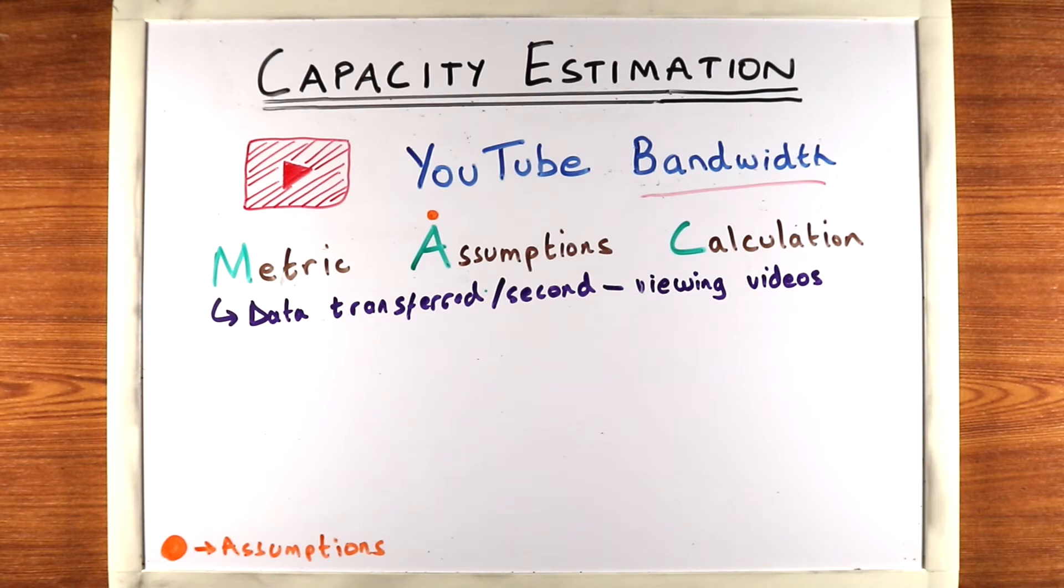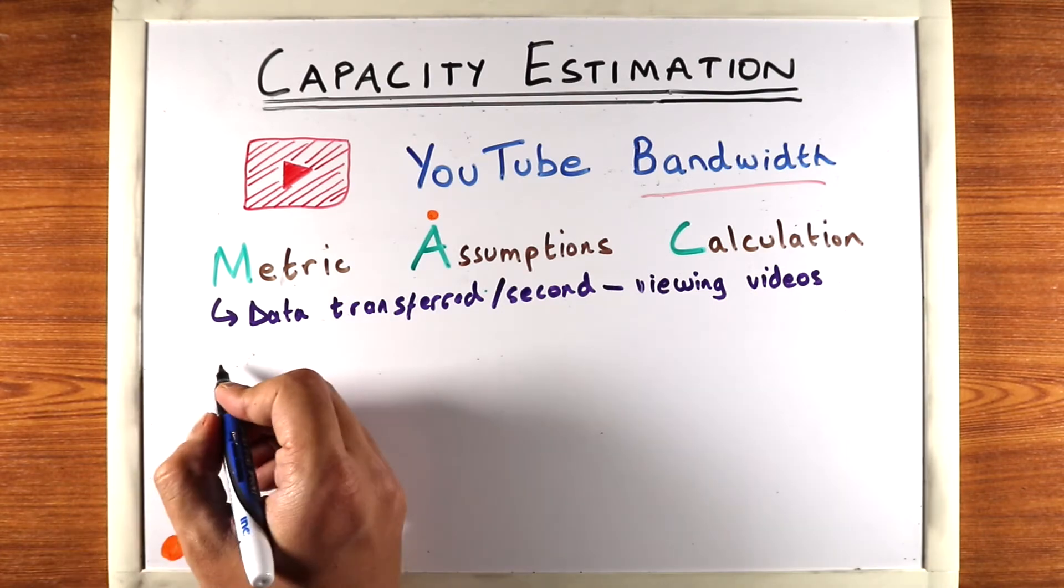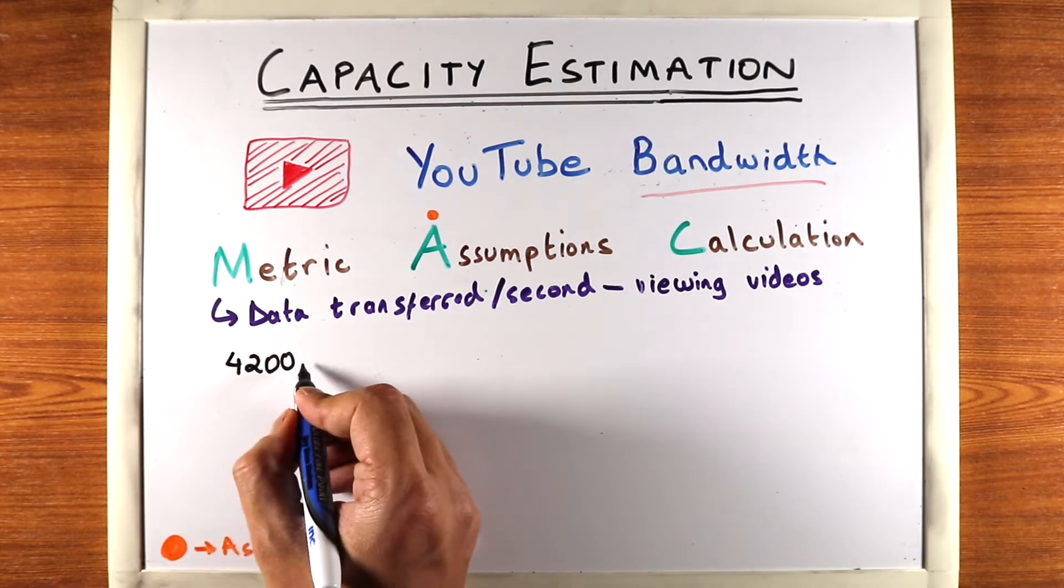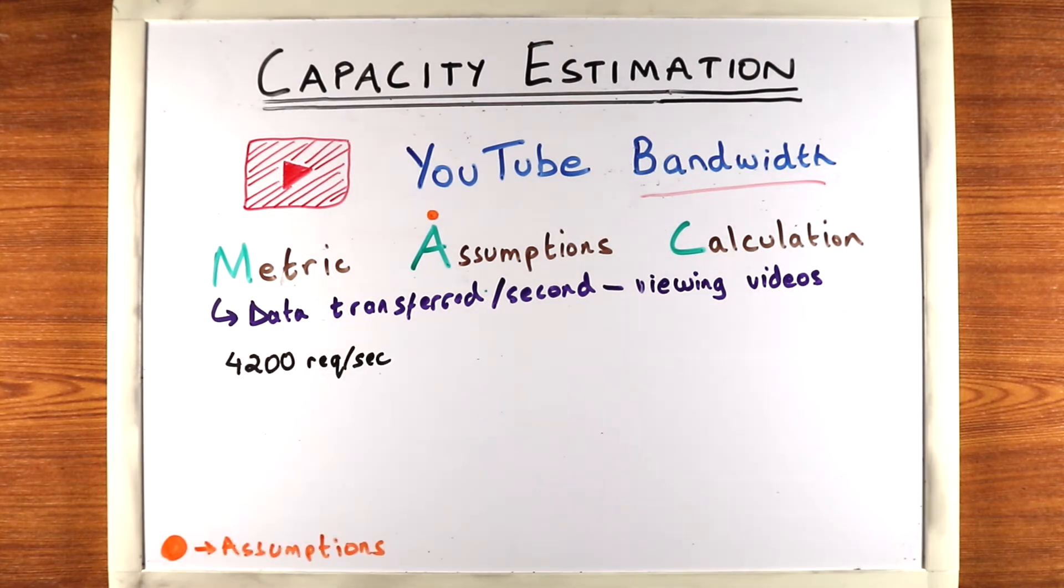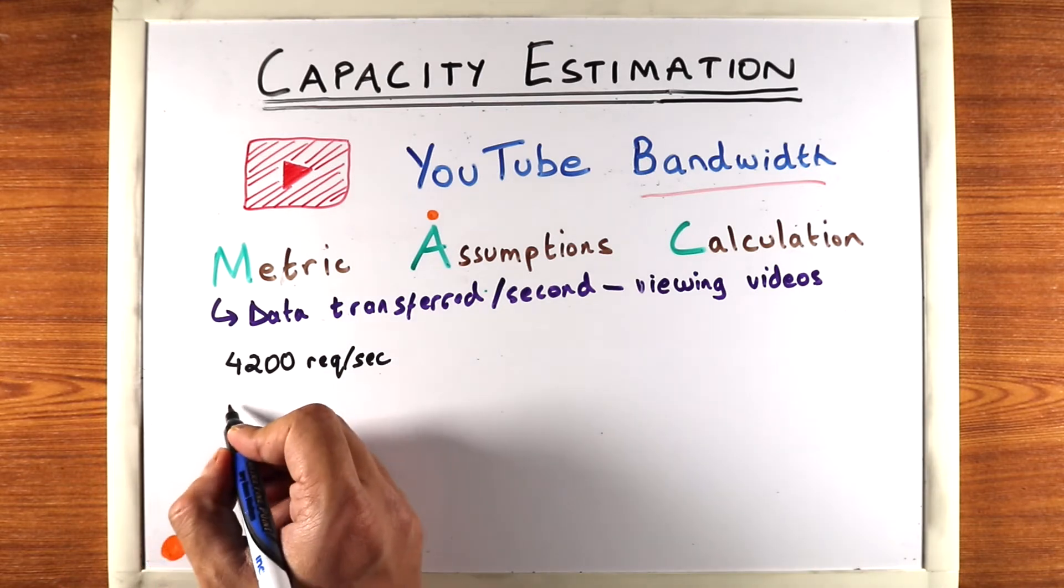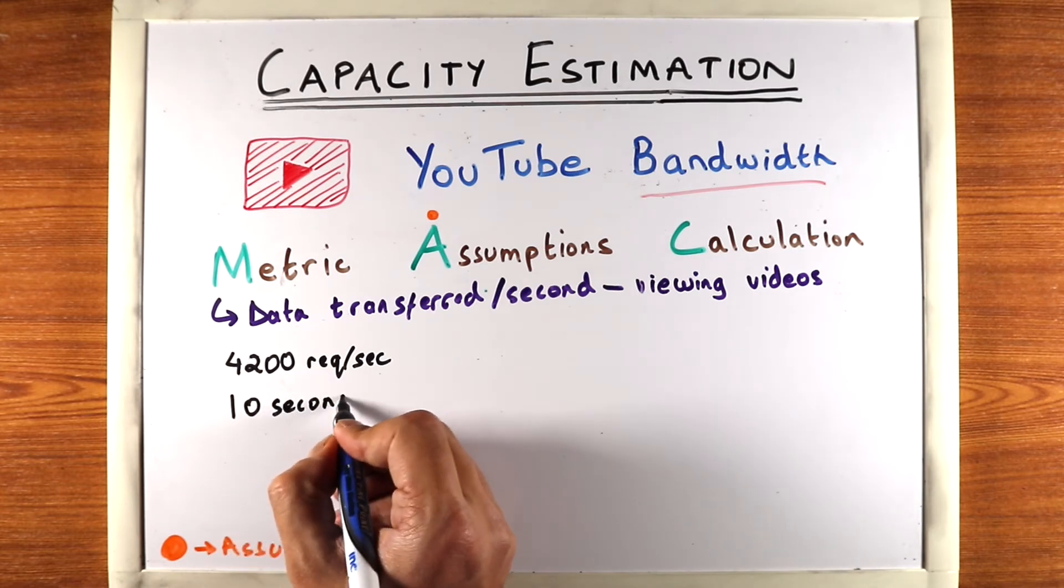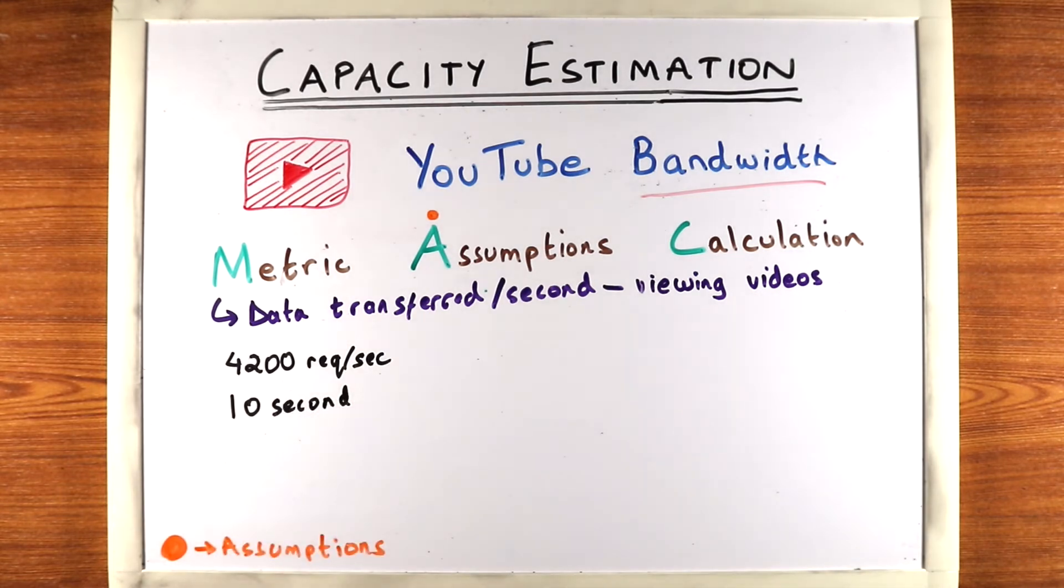So let's start defining our assumptions now. Previously we estimated the read requests that our system will see will be 4200 requests per second. The entire estimation is in a different video and the link is posted below and as part of this we had also estimated that each request will give you a 10 second chunk of the video. So we said our system will have adaptive streaming which means video is served in chunks and the browser will request for the video in chunks.